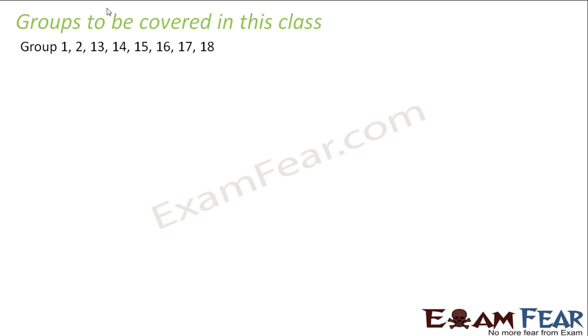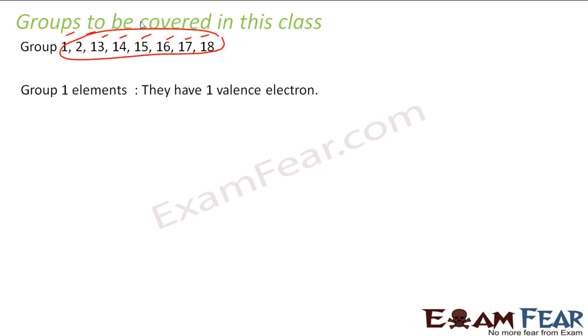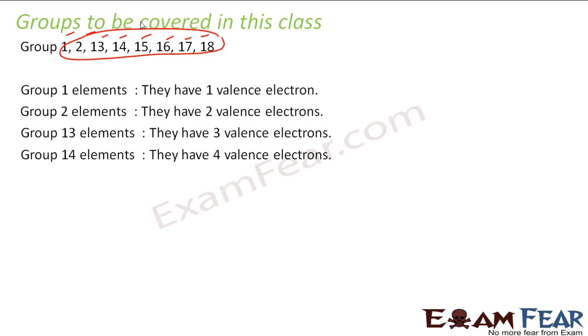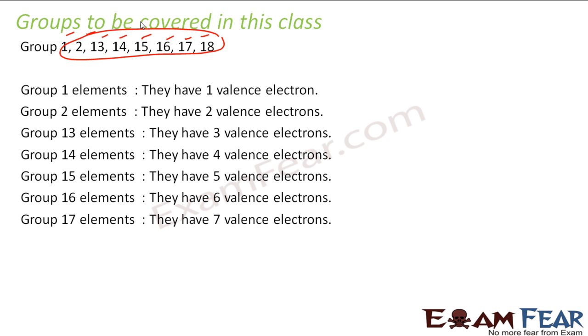And please note, we'll be covering only group 1, 2, 13, 14, 15, 16, 17, 18. Only these groups will be covering in this class. The other groups will not cover because they're a little complex and they have different little complex way of finding the electronic configurations. We'll study those things in the higher classes. But for this class, we'll study only these groups. So group 1 has 1 valence electron, group 2 has 2, group 13 has 3 valence electrons, 14 has 4, 15 has 5, 16 has 6, 17 has 7, and 18 has 8 valence electrons.